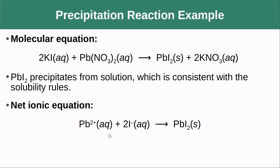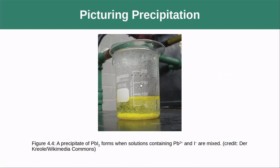Looking at the net ionic reaction, I know these ions are in solution, so I need to remove the potassium and the nitrates — those are my spectators. I'm left with the lead cation reacting with two iodide anions to form that insoluble species. In general, when writing the net ionic reaction of a precipitation reaction, you write the precipitate on the product side and the ions that make up that ionic compound on the left. Here's an image of that reaction — you can see the pretty yellow lead iodide precipitate forming.